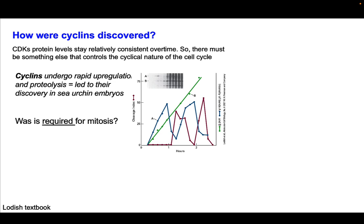How were the cyclins discovered? The CDK protein levels stay relatively consistent over time, which led scientists to think there must be something else controlling the cyclical nature of the cell cycle. A researcher working on sea urchin embryos observed these proteins called cyclins. Their protein expression — shown as a band labeled A — was absent, then appeared as a dark band, then went away, then came back. Quantification showed protein A started to go up, then went down, then up, then down again in a cycle.